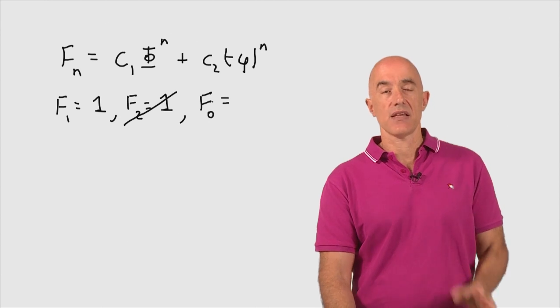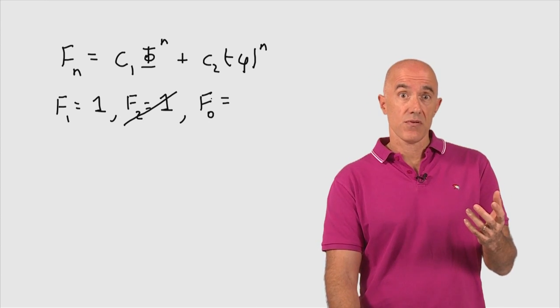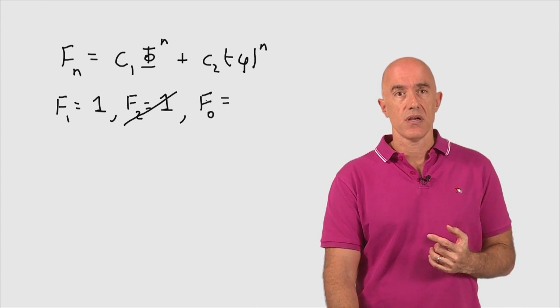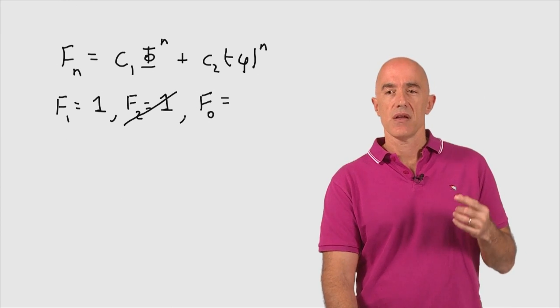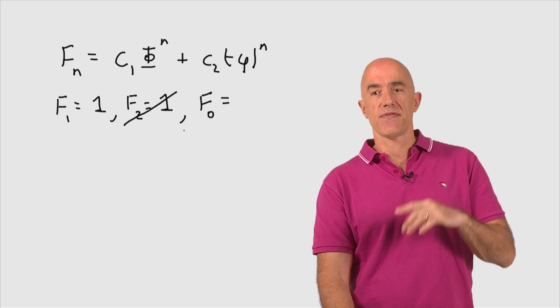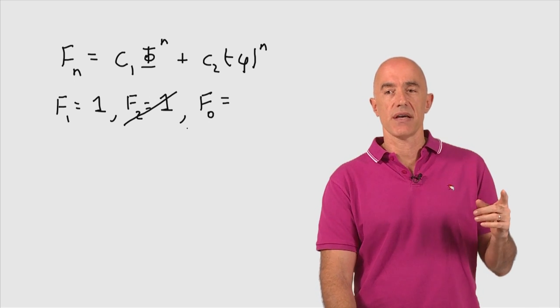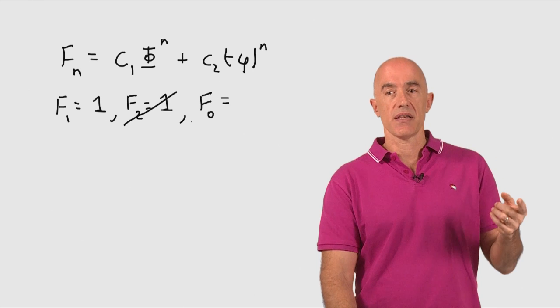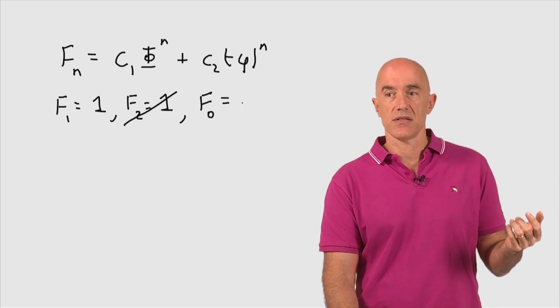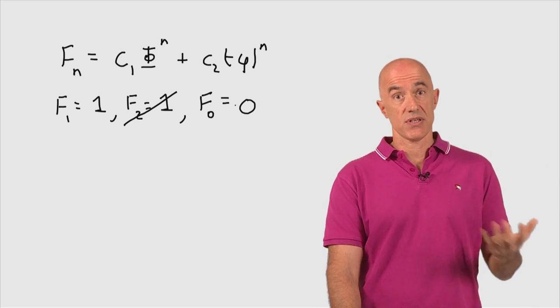So we define a new Fibonacci number, which is called F0. We can define this because we just have to satisfy the recursion relation. The recursion relation is that F0 plus F1 equals F2. So F0 plus 1 equals 1, that one has an easy solution. F0 is 0.